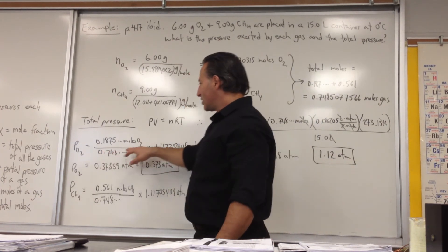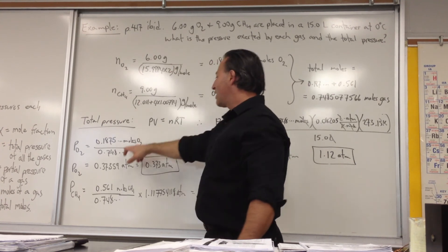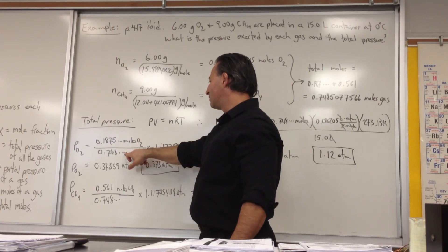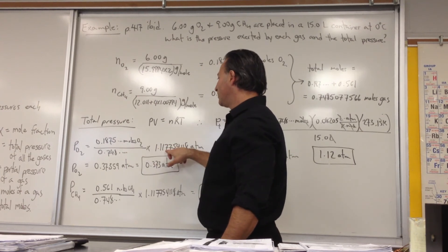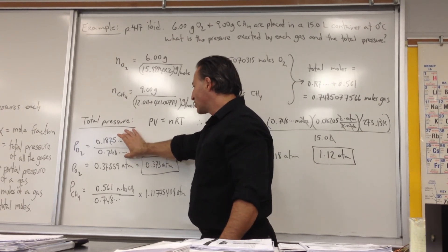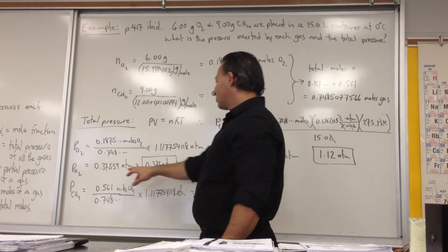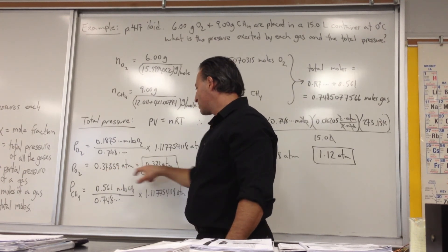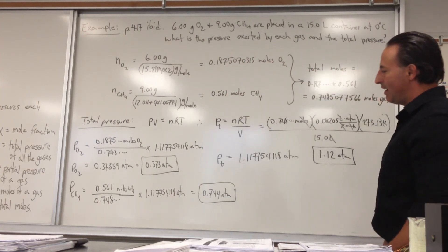And the partial pressure of oxygen is equal to the moles of oxygen present, which we calculated over here, divided by the total moles of all the gases present in the mixture, times the total pressure. So this is the mole fraction part. This is the total pressure. And it will give us the partial pressure of oxygen, which is 0.27 atmospheres. We're allowed three significant figures, so we find that's 0.373 atmospheres.